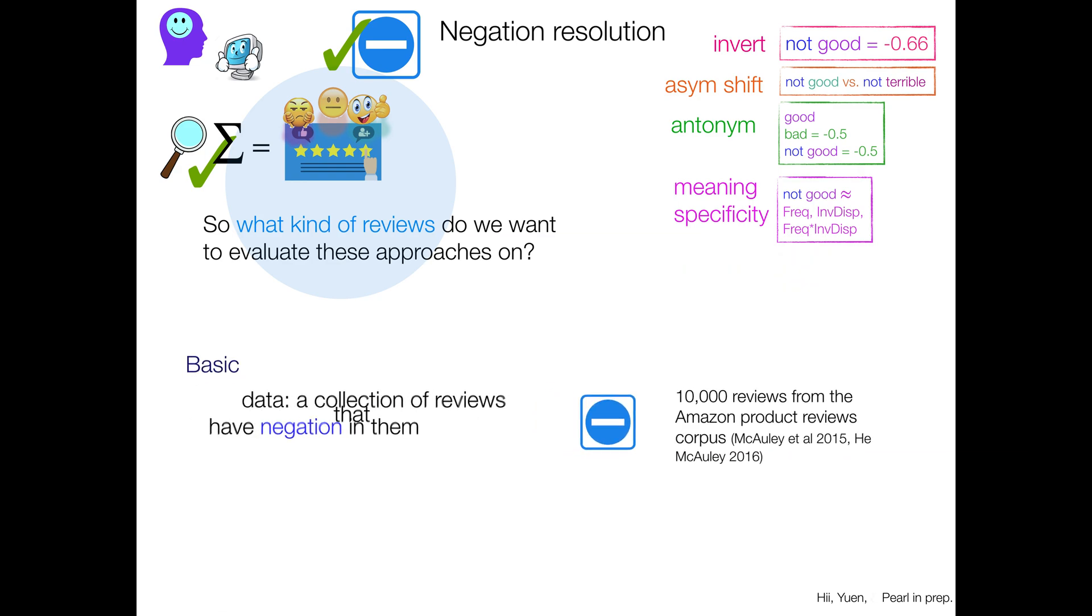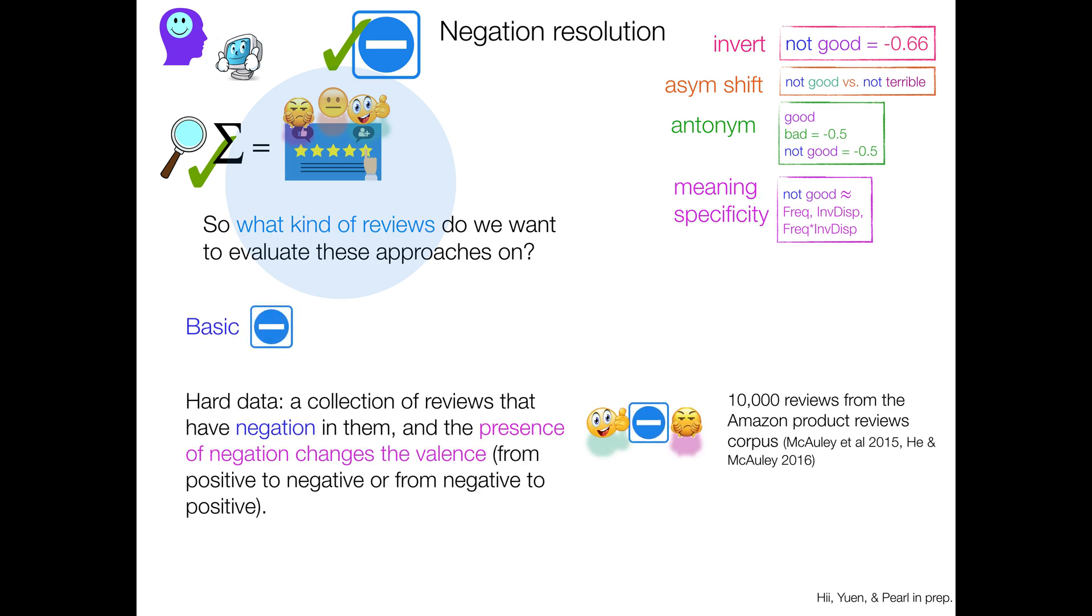But we also maybe want to look at harder data. A collection of reviews that have negation in them and the presence of negation has a serious impact. It changes the sentiment. It changes the valence from positive to negative, or from negative to positive, and we have 10,000 of these. So the upshot is that on the hard data, doing nothing will definitely get the wrong answer. Your baseline is zero on the hard data set when we do nothing.